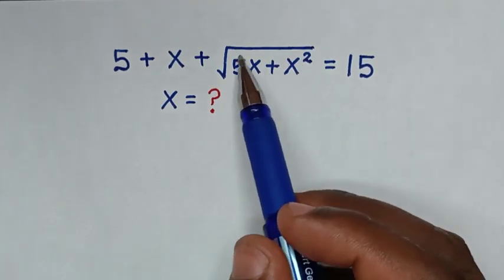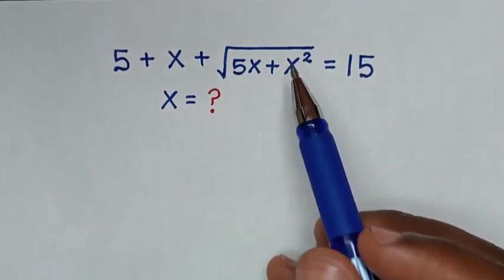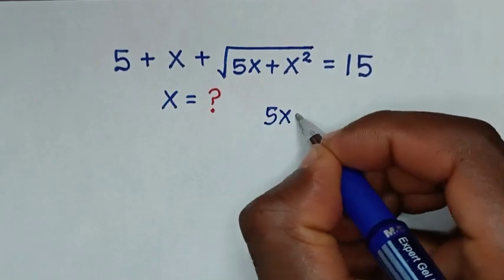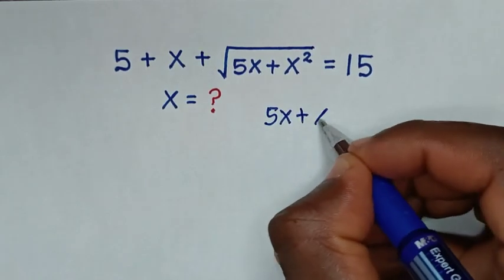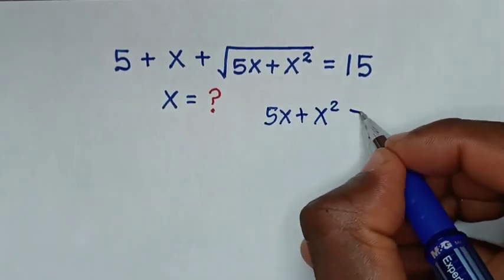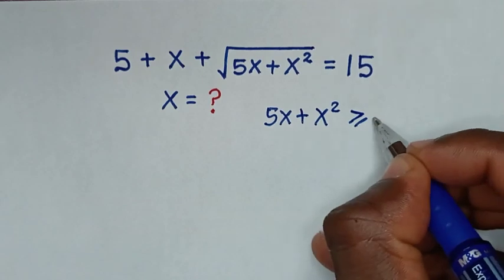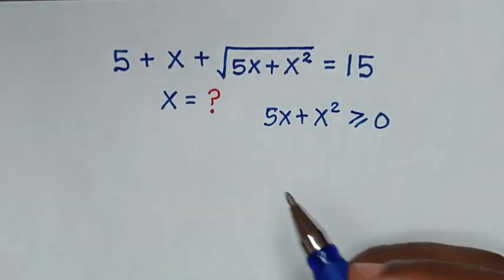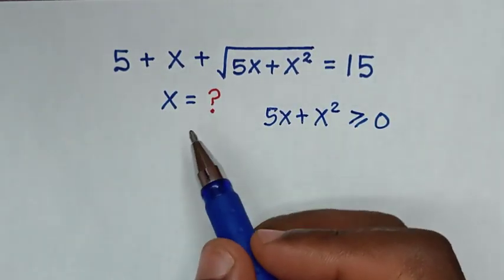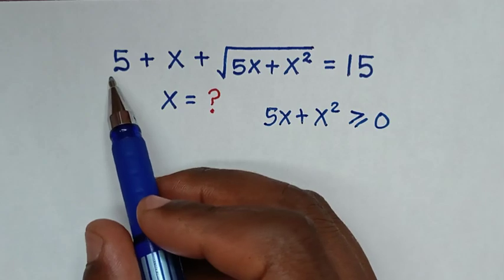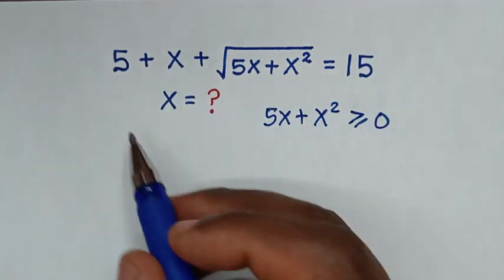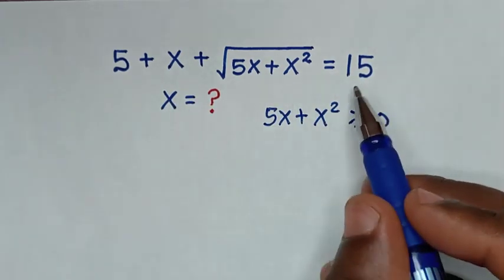from the expression under the square root, which is 5x plus x square, it should be greater than or equal to 0. When we get the value of x it should satisfy this whole equation.